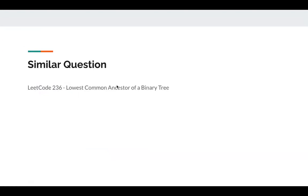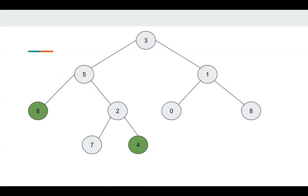As I mentioned previously, there's a similar question, LeetCode 236 — Lowest Common Ancestor of a Binary Tree. If you haven't practiced this problem, you should practice that problem first. Let's first recall LeetCode 236 and see how to solve it.